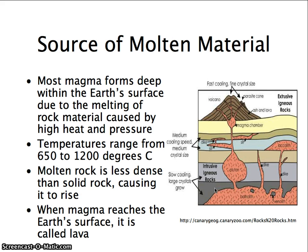Most magma forms deep within the Earth's surface through the melting of rock caused by high heat and pressure. Temperatures inside the Earth range from 650 to 1200 degrees Celsius. To give you an idea, you are sitting at 20 degrees Celsius at the moment. So rock has to melt at 650 to 1200 degrees Celsius.